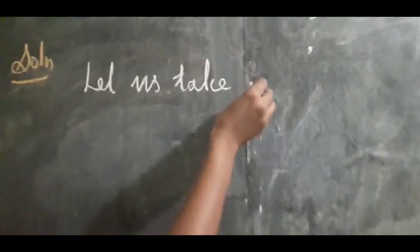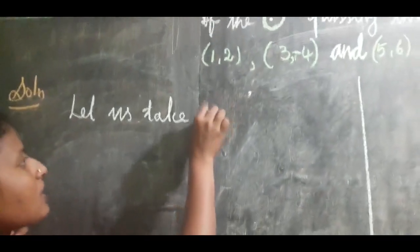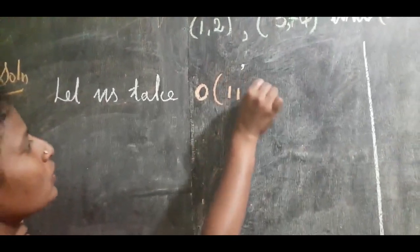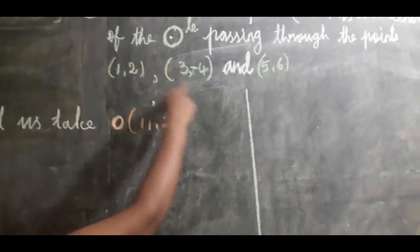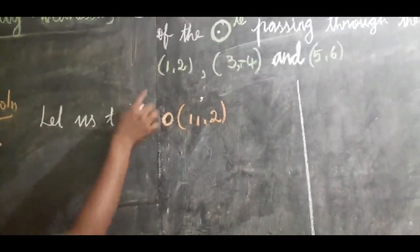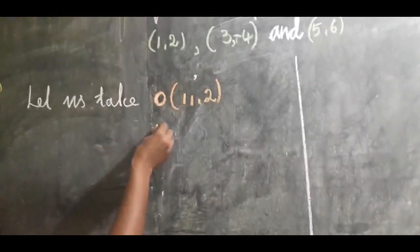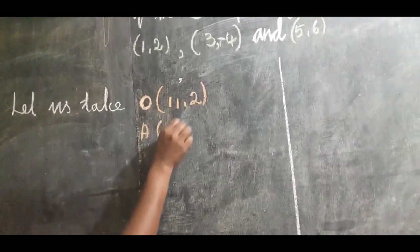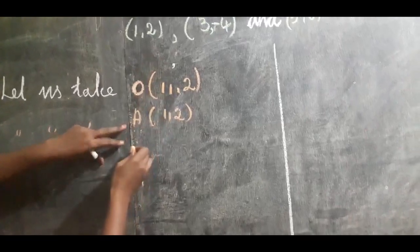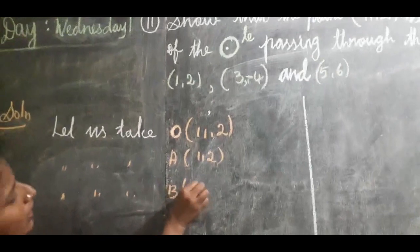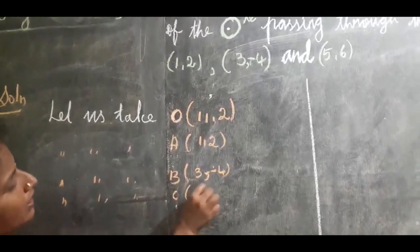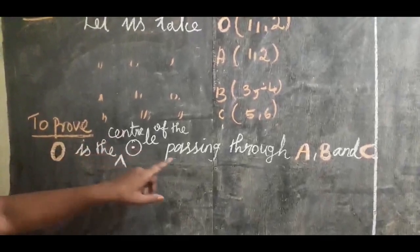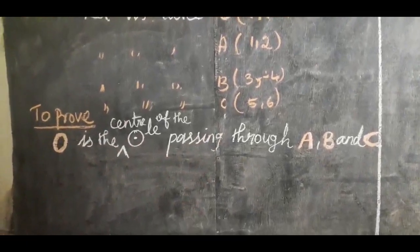Let us take the center of the circle O. The point O is (11, 2) — that is the center of the circle. The three points passing through the circle are: A(1, 2), B(3, -4), and C(5, 6). We have to prove that O is the center of the circle passing through A, B, and C.